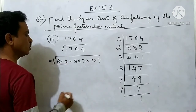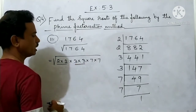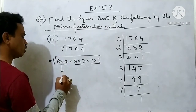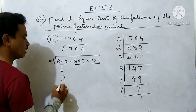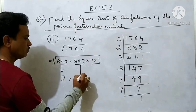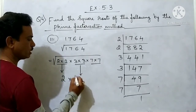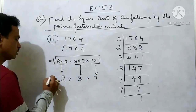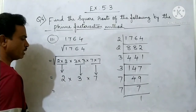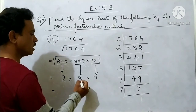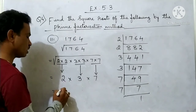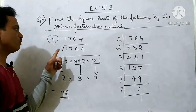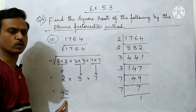First 2 digits form group 1, next 2 digits group 2, next 2 digits group 3. From group 1 take 2 outside, from group 2 take 3, from group 3 take 7. Multiply: 7 threes are 21, 21 twos are 42. So the square root of 1764 is 42.